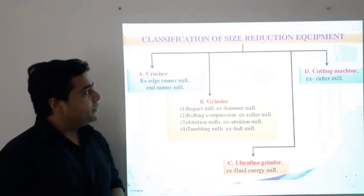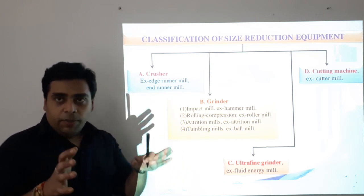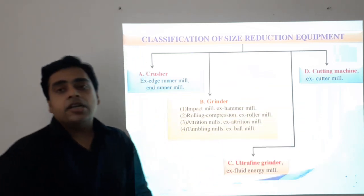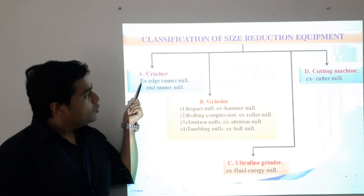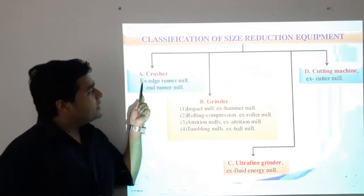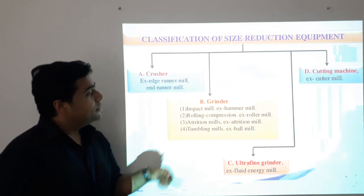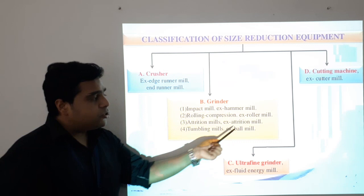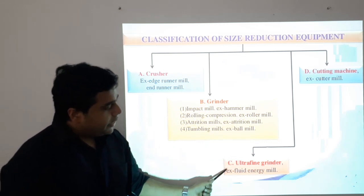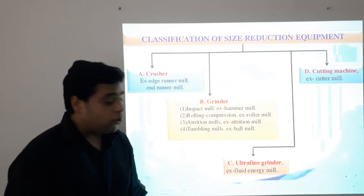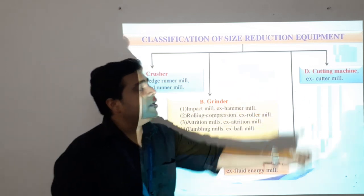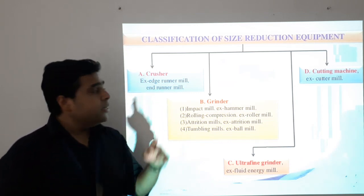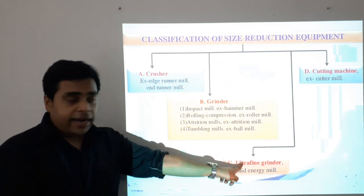First, come to the classification of size reduction equipments. Basically we have four basic types of equipments: crushers, grinders, ultra-fine grinders, as well as cutters or cutting machines. Two basic types of crushers used in industry are the age runner mill and end runner mills. Grinders include impact mill, hammer mill, rolling compression roller mills, attrition mills, and tumbling mills or ball mills. Ultra-fine grinders include the fluid energy mill, and the cutting machine is a cutter mill. The classification is based on how size reduction is obtained — by crushing, grinding, ultra-fine grinding, or by cutting.